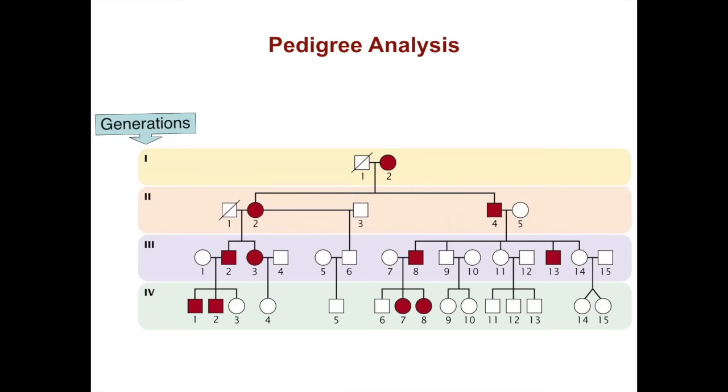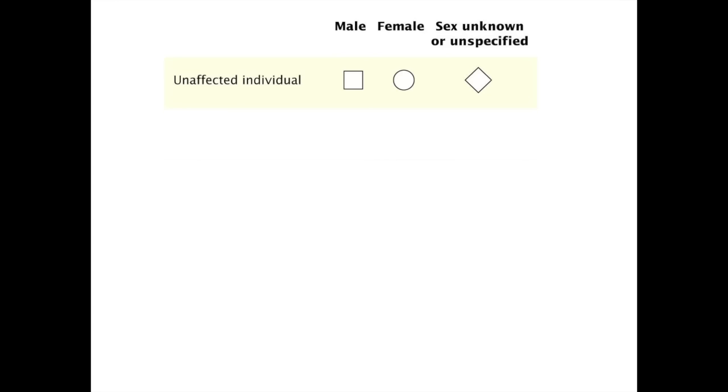Here is a pedigree. The generations are on the left, and you can see a number of markings on this. Males are marked by boxes and females are marked by circles. A person affected by a trait is usually marked in red. Let's go through the symbology step by step. Unaffected individuals are not shaded — the male with a square, female with a circle.